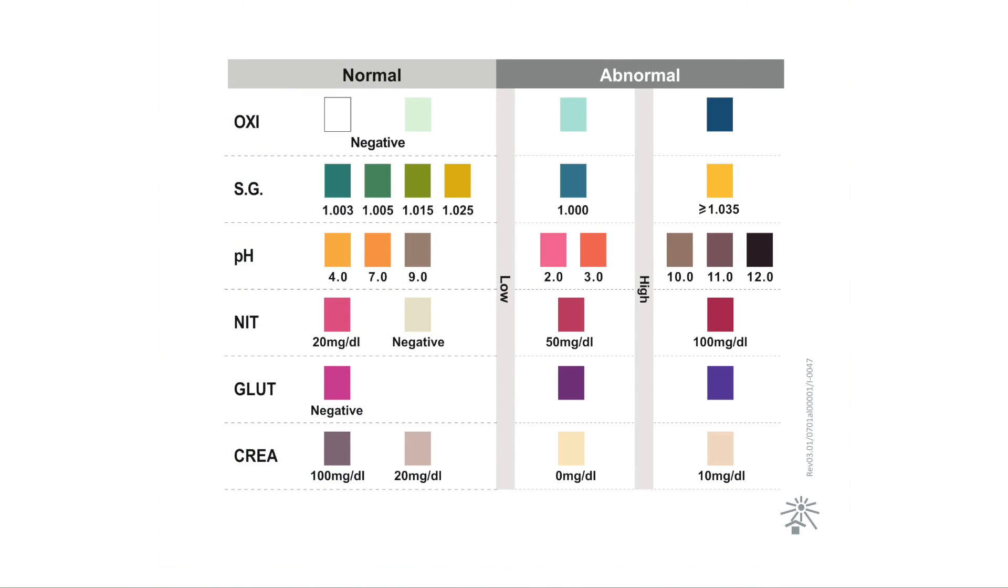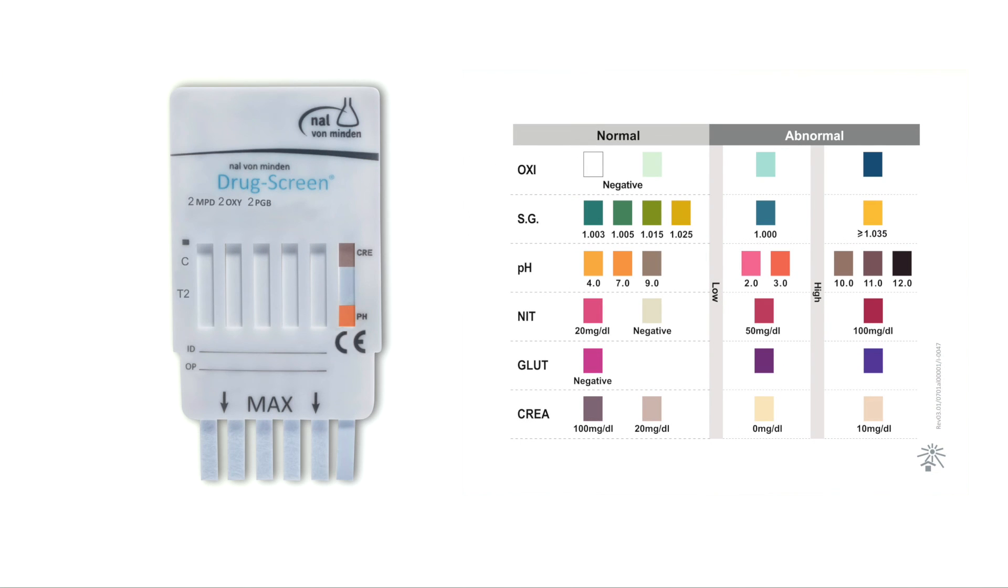The result interpretation of adulteration parameters is done using the enclosed colour card. Compare the colour of the test fields with the corresponding fields on the colour chart and read the result.